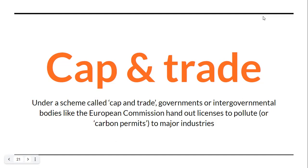Under the scheme called cap and trade, governments — both individual governments as well as groups of governments, intergovernmental bodies like the European Union — they hand out licenses which are known as carbon permits. Critics would say that these carbon permits are a license to pollute, whereas people who are in favor of this market-based instrument say these are permits which put a limit, or cap, on carbon emissions. The European Union Emission Trading Scheme is one of the most widely applied cap and trade schemes.